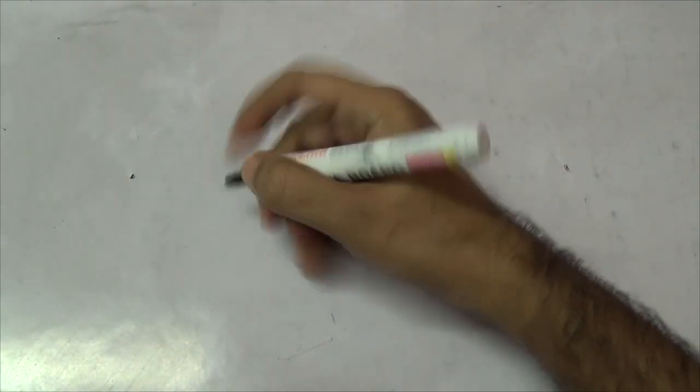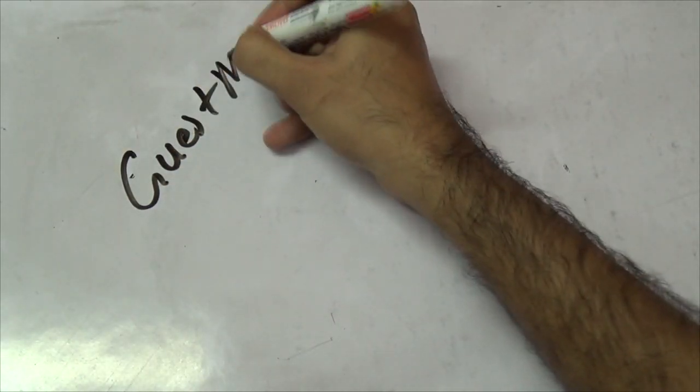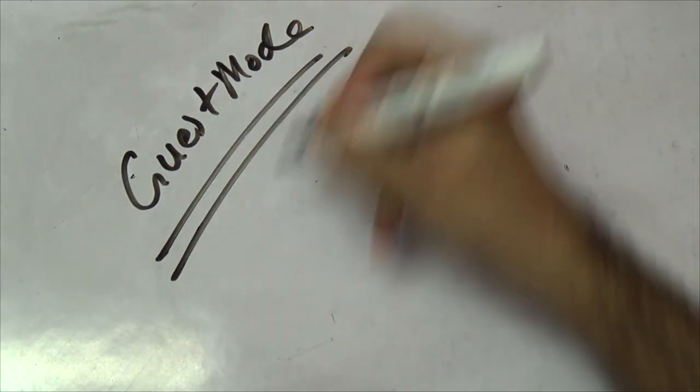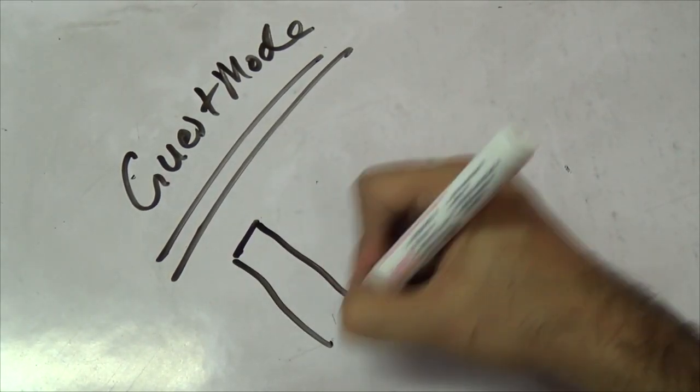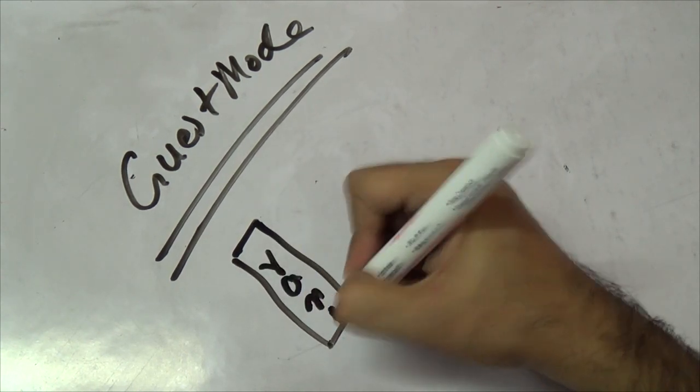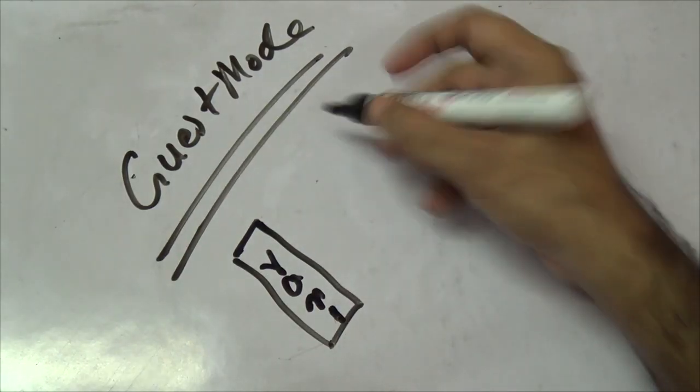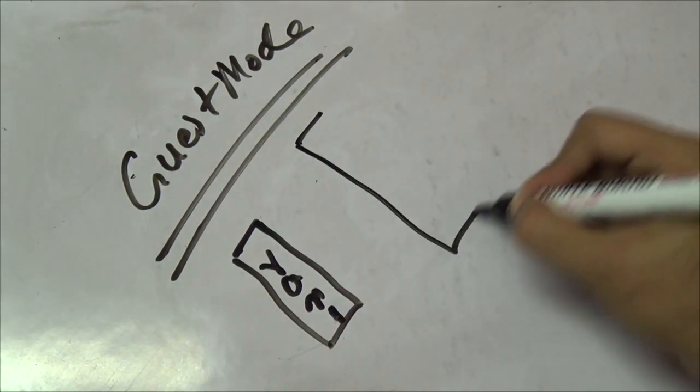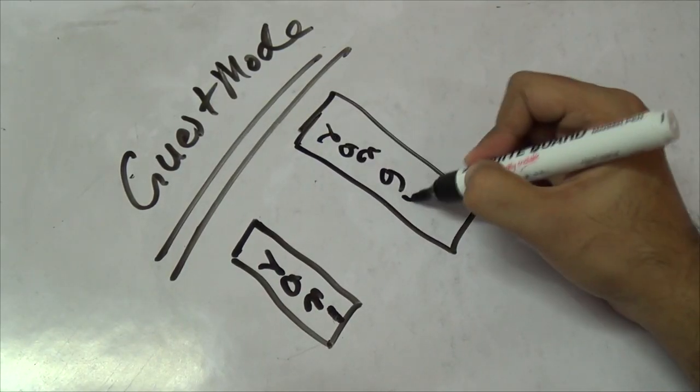Now let me also talk about some advanced features, for example guest mode. Some of the advanced routers do have a mode called guest mode in which you can set up one more network. For example, let's say your primary Wi-Fi network that you have set up is ran one as my primary network. My router does have this mode of guest mode where I can create another Wi-Fi network, let's say that is ran guest.